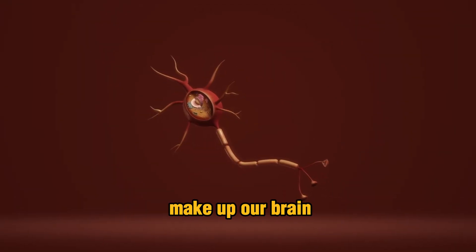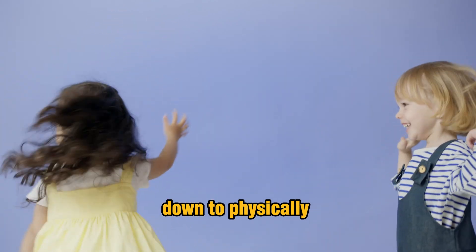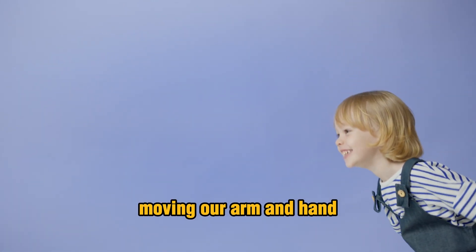Neurons are the cells that make up our brain and central nervous system. It's the way the message from our mind to pick up that ball travels, from a thought down to physically moving our arm and hand.